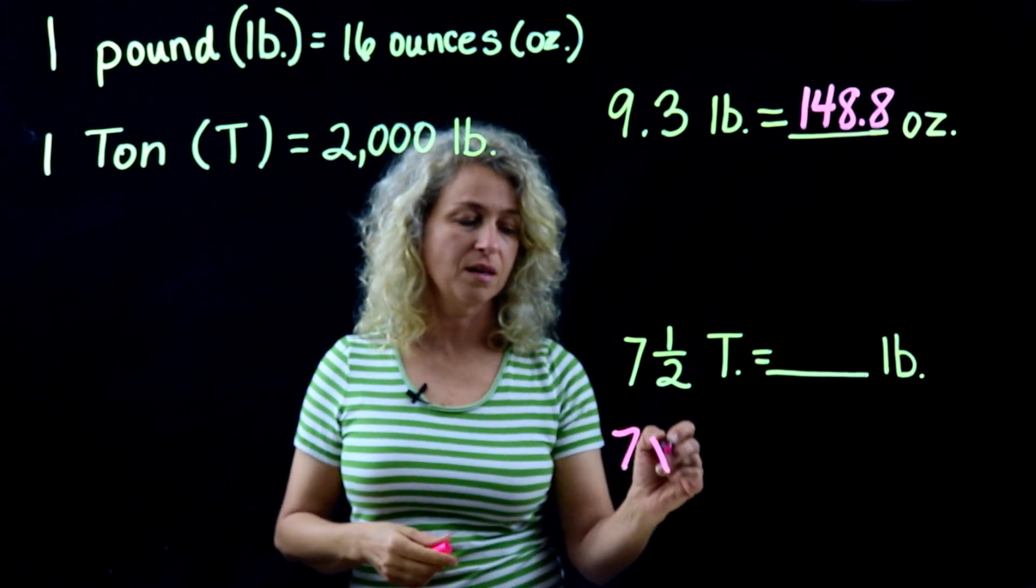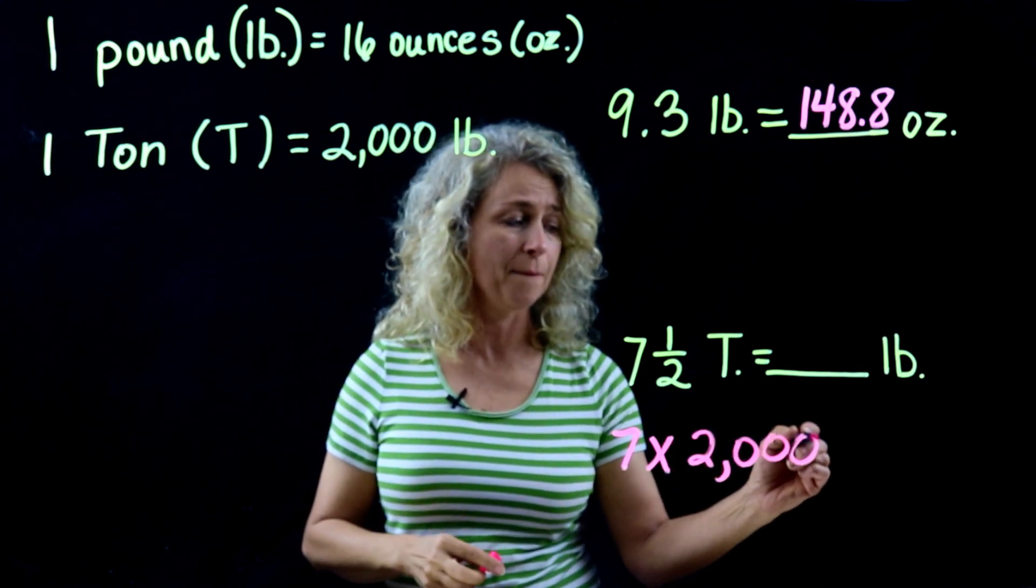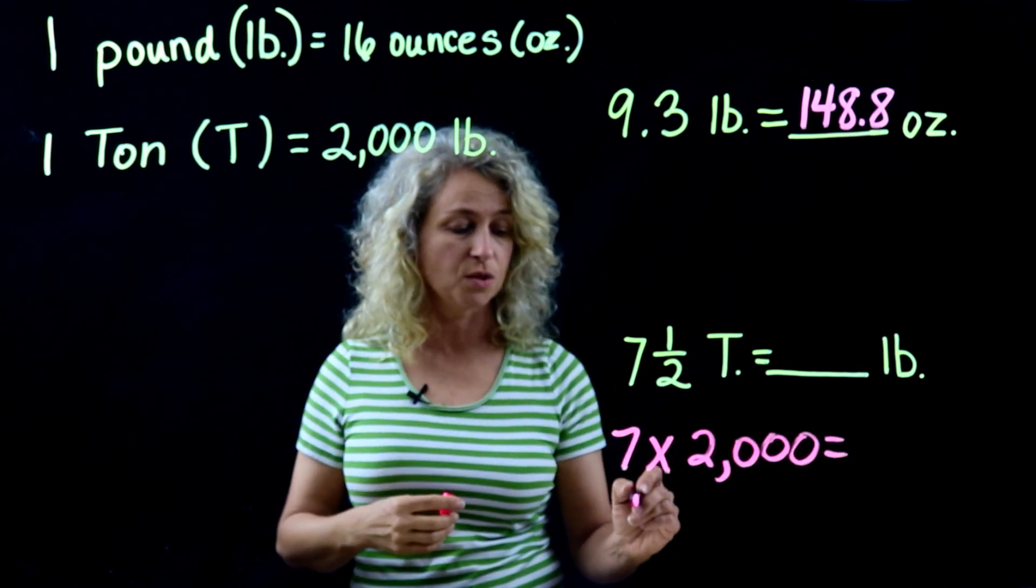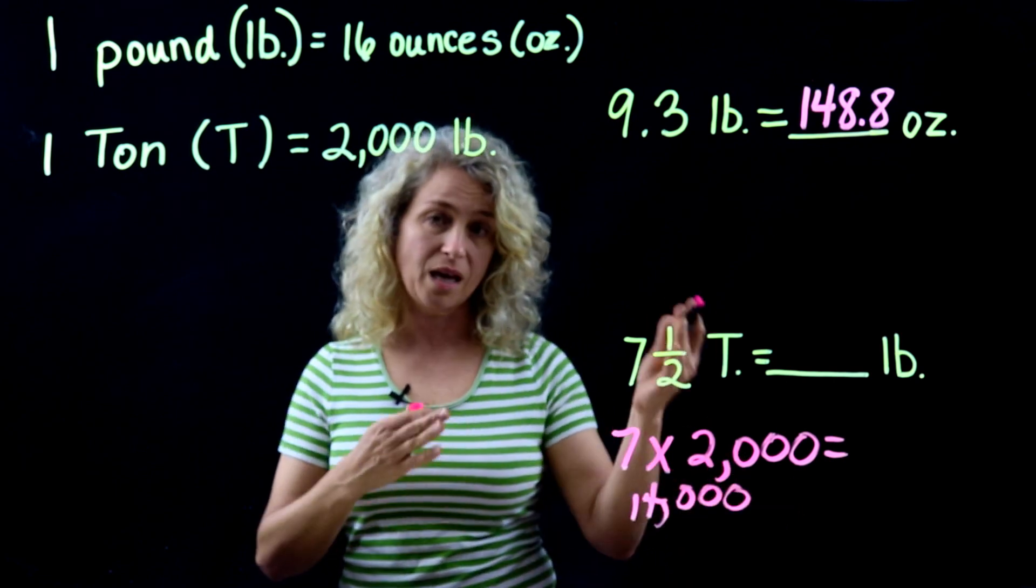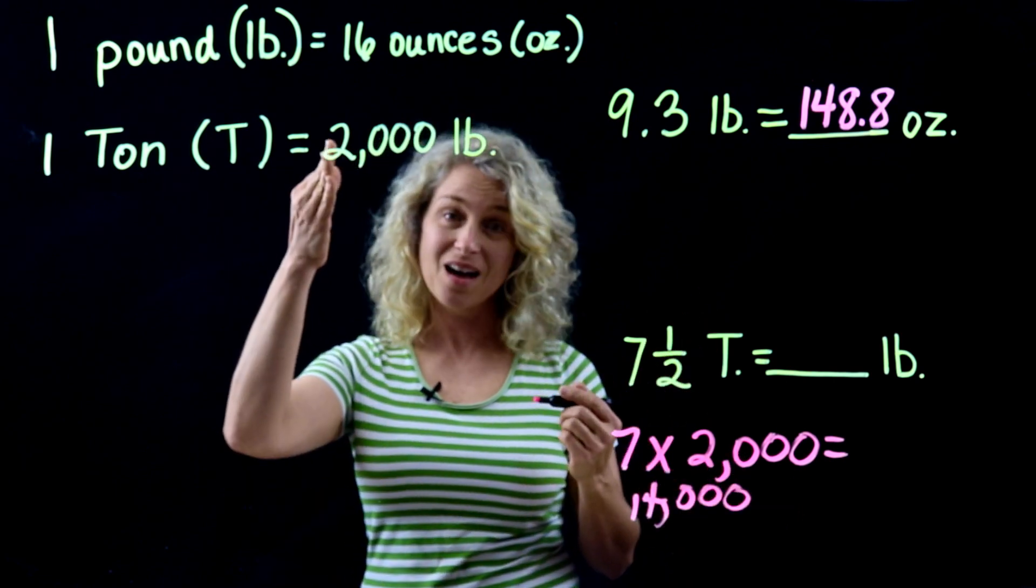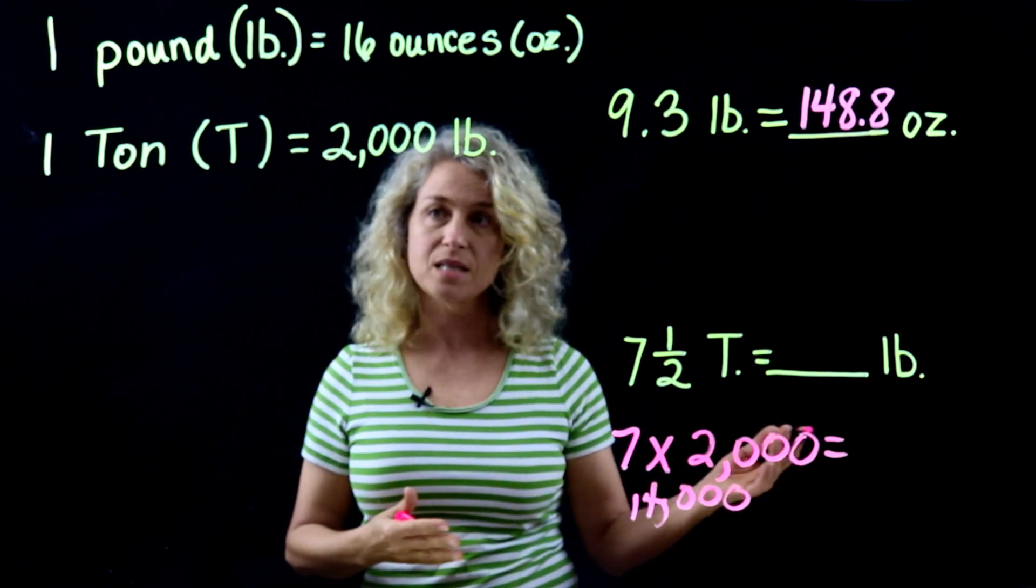...and you can do that mentally, right? 7 times 2 is 14, and so that would be 14,000. And a half - well, a half of 2,000 is 1,000, right? So plus another 1,000 would be 15,000.